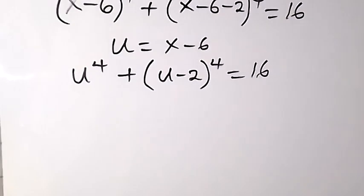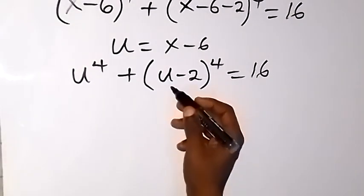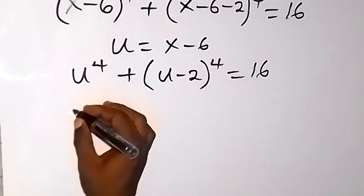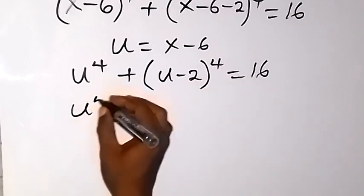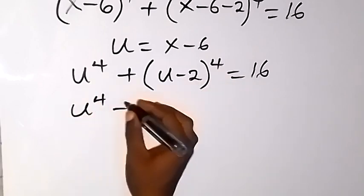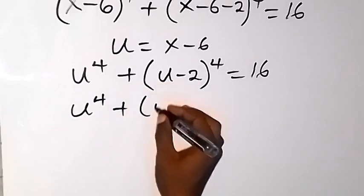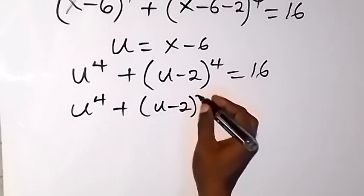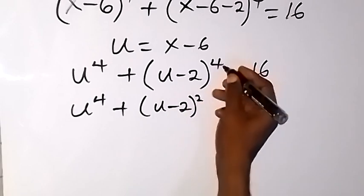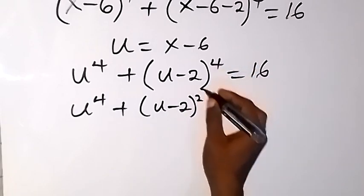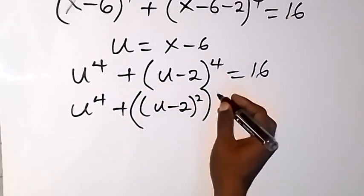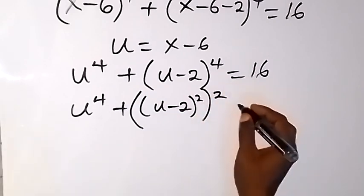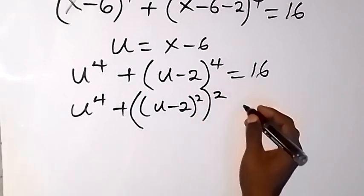From here we can simplify (u minus 2) raised to power 4. This becomes u raised to power 4 plus (u minus 2) raised to power 2, then raised to power 2 again — so 2 times 2 will be 4 — which is equal to 16.